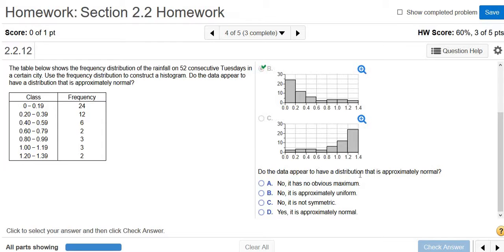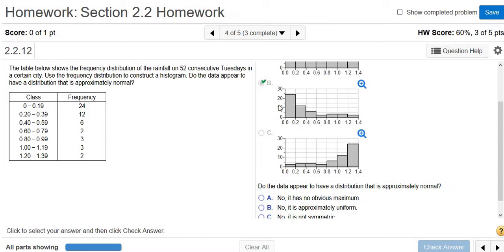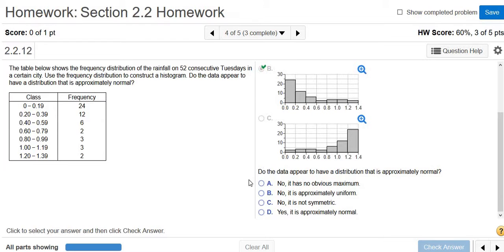Does the data appear to have a distribution that is approximately normal? Well, if it's bell-shaped, if it's roughly bell-shaped, it's approximately normal. In this case, it is definitely not bell-shaped. So I would say no, it is not approximately normal.